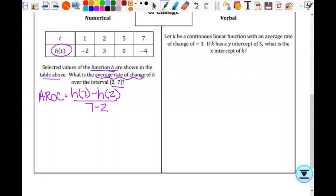So the rest of this is a piece of cake, right? What's h(7)? Negative 4 minus what's h(2)? 3 over 7 minus 2, which is 5. And that gives me negative 7 over 5.